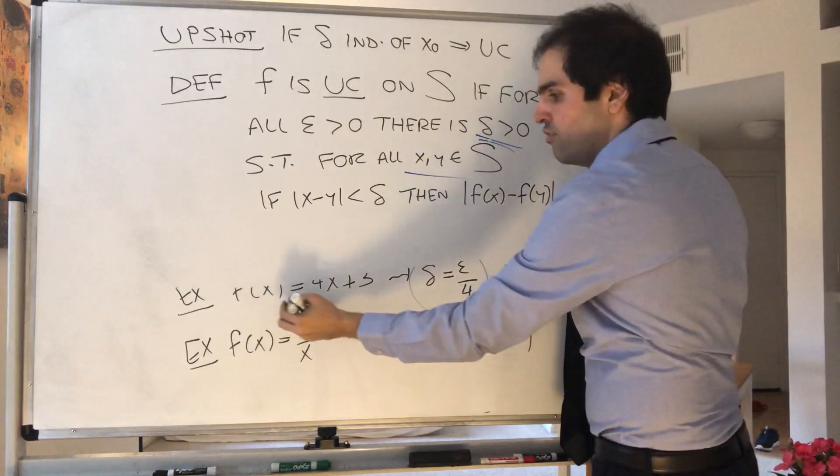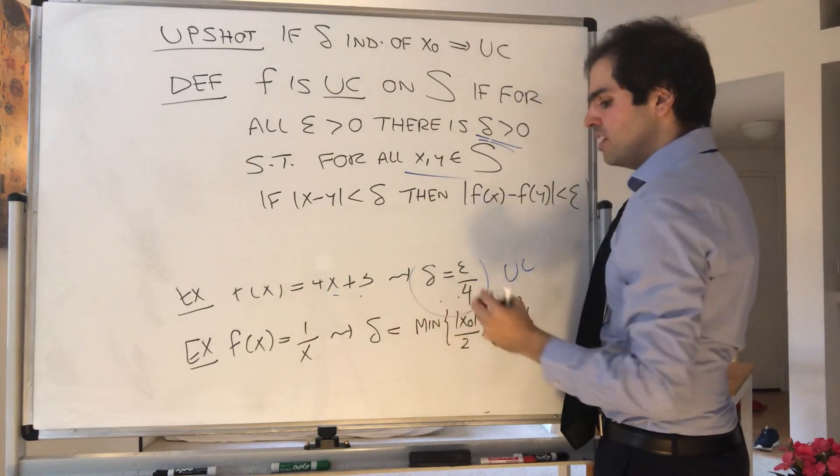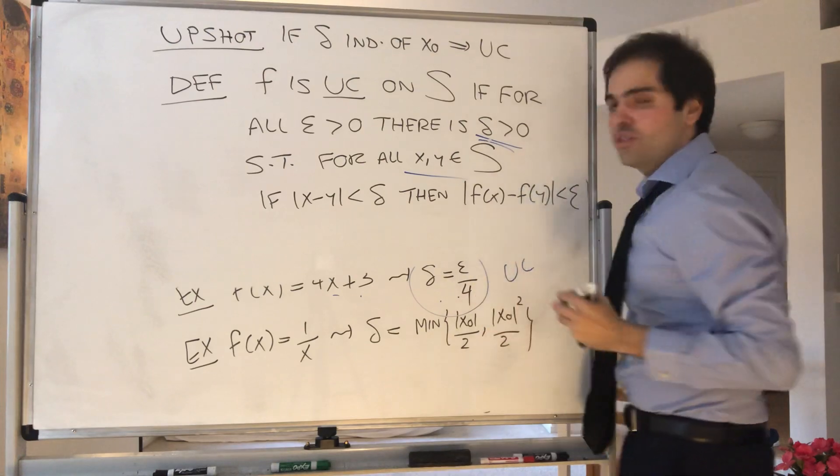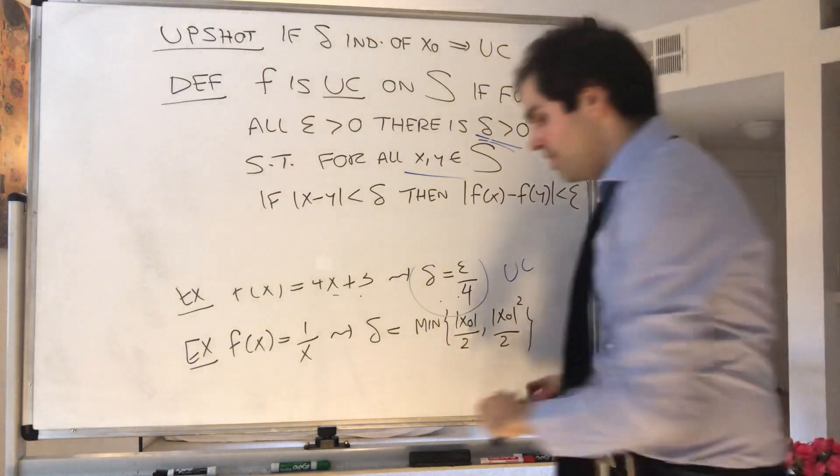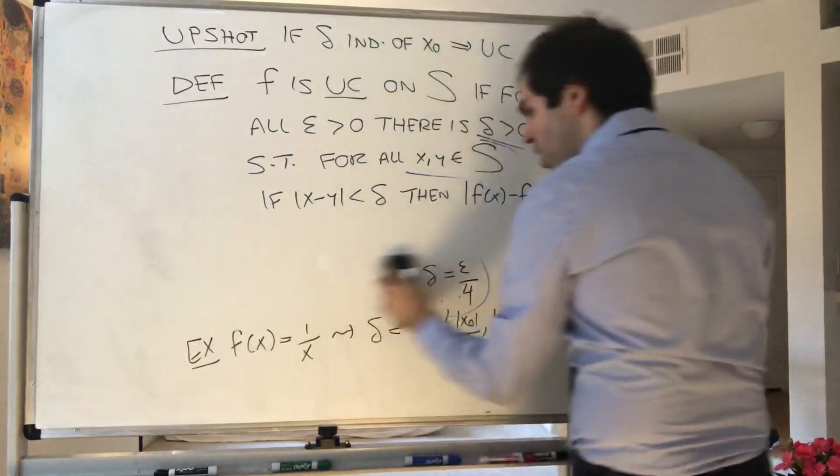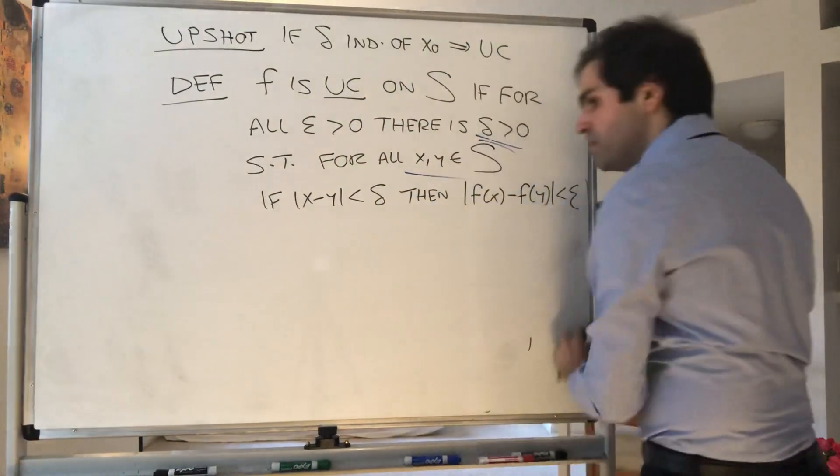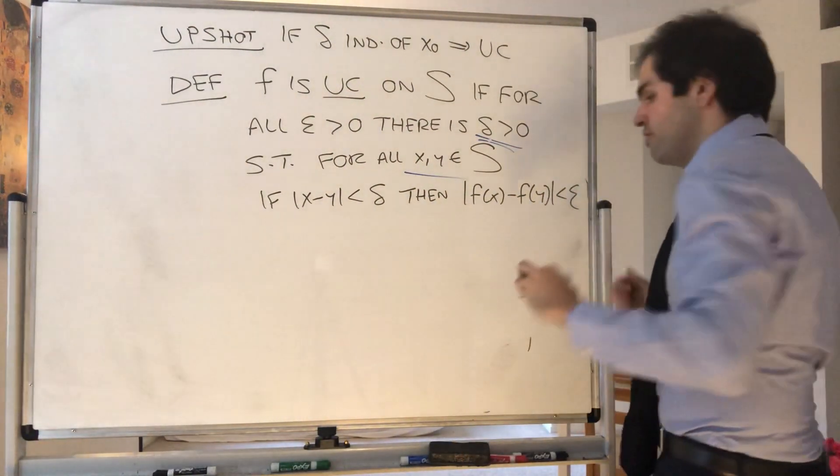So for instance, the function 4x plus 3, we found delta doesn't depend on x0, so it's uniformly continuous. And uniform continuity just means continuous the same way everywhere.